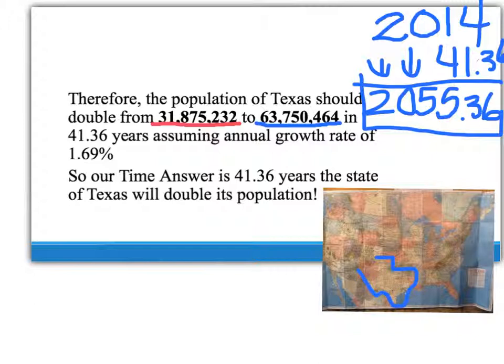We just calculated the population of the state of Texas by looking at the Census Bureau, doubled the population, and figured out that using an annual growth rate of 1.69%, in about 41 years and 3 months, the population of the state of Texas should double. I hope this has been helpful. Have a great day.